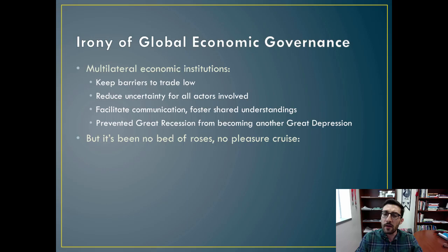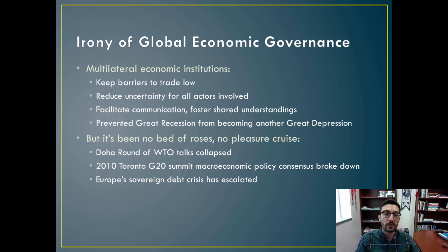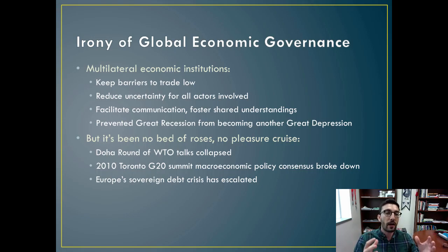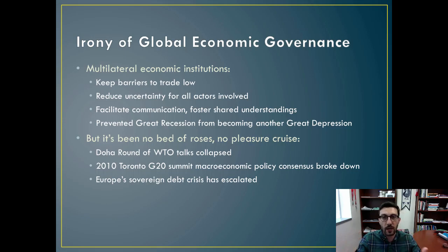So why is that the case? The WTO holds rounds of trade talks every so often, and the Doha round in Qatar collapsed completely. We've also seen examples like the WTO talks in Seattle, where activists against globalization — concerned about its impacts on their societies, indigenous groups, and livelihoods — tried to scuttle the WTO meeting and were able to prevent some meetings from taking place. More recently, the Doha round collapsed. These are talks where countries discuss important issues pertaining to international economic governance.